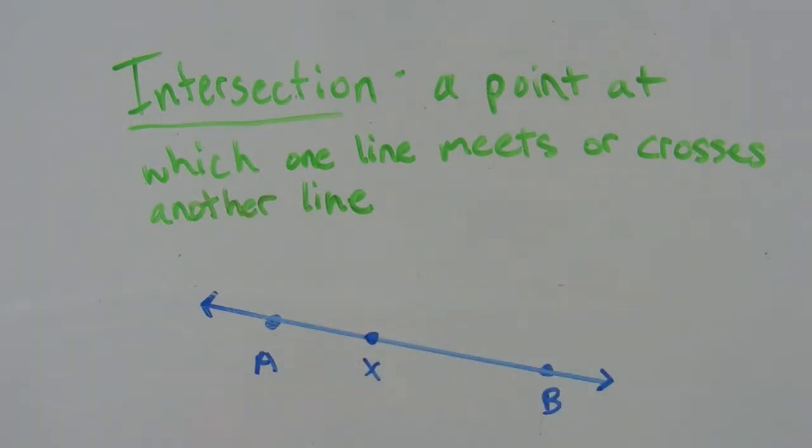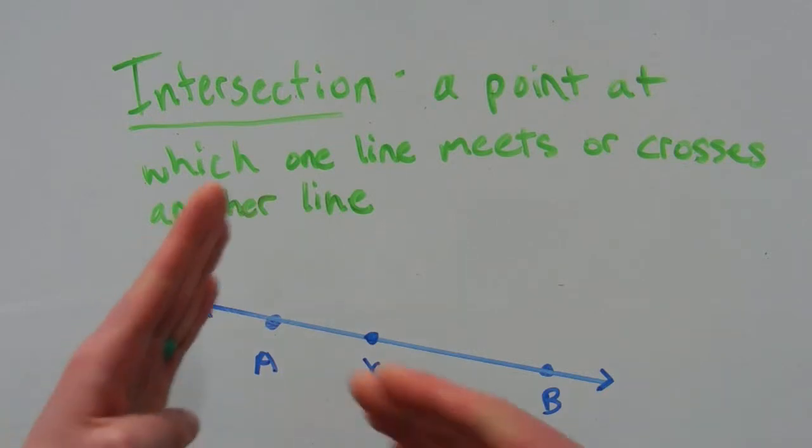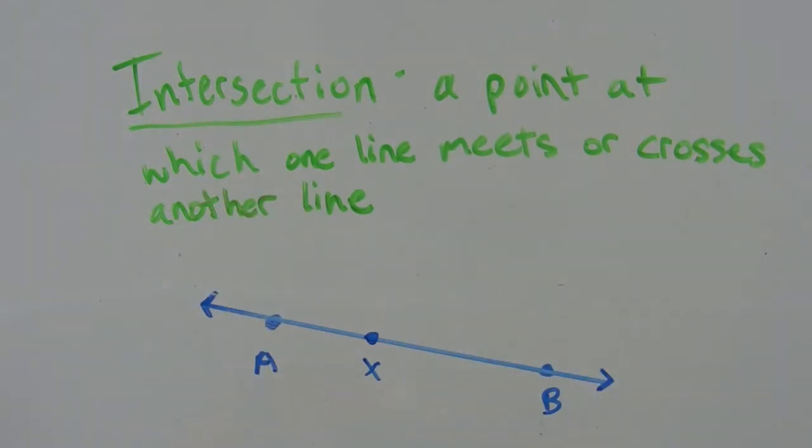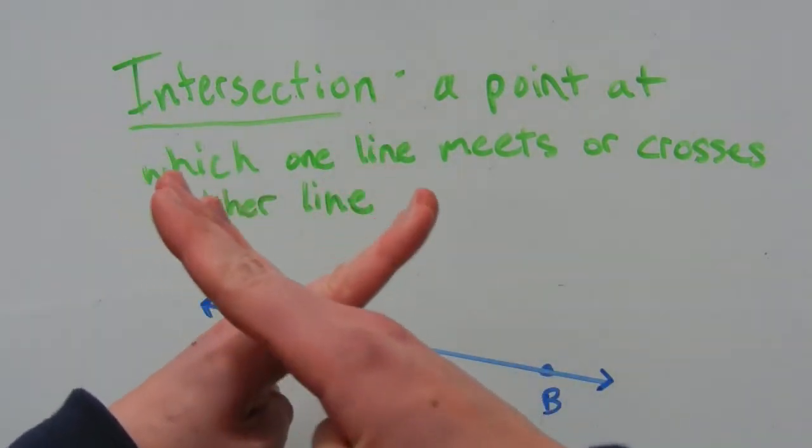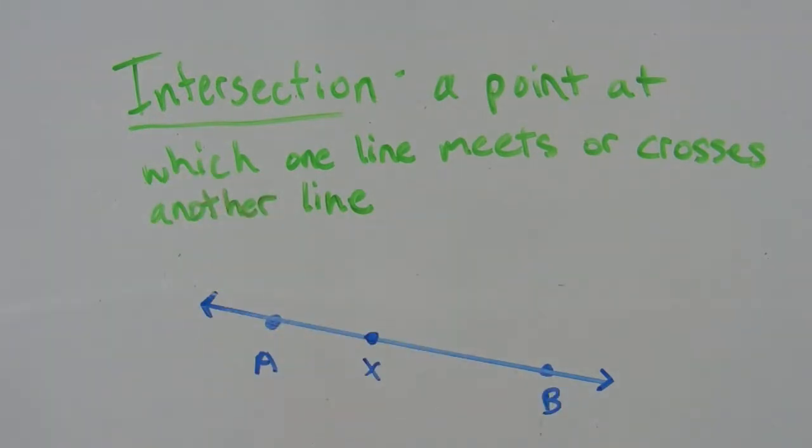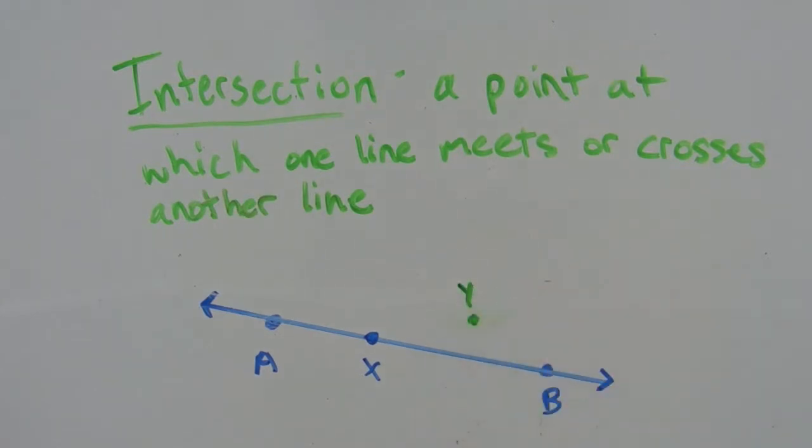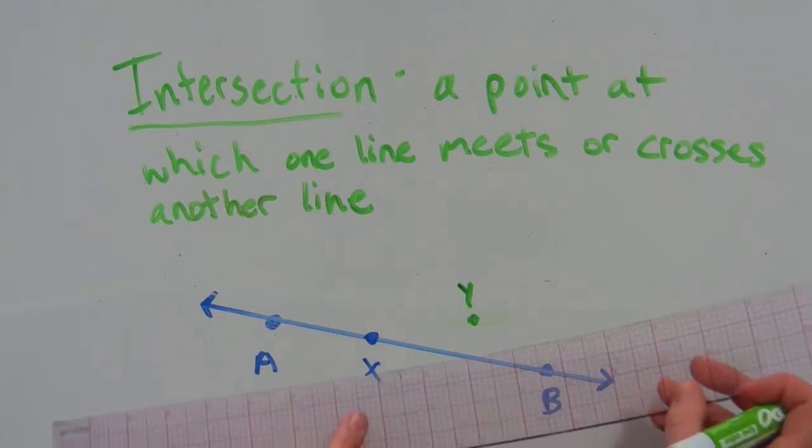A good example of an intersection to help you remember it is thinking of two roads crossing. That point at which they cross is called the intersection. And the same is true for a line crossing another line. That point at which they cross is an intersection. Let's go ahead and create another line. We're going to have the intersection occur at point X. So I'll draw another point. We'll call this point Y. And create a line.